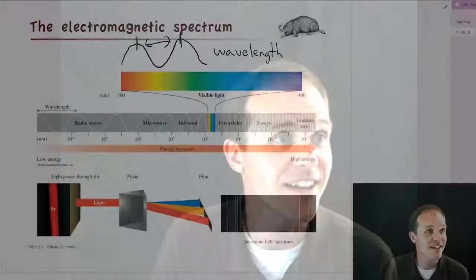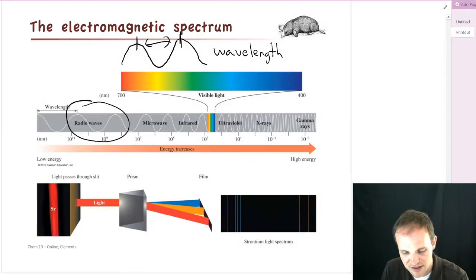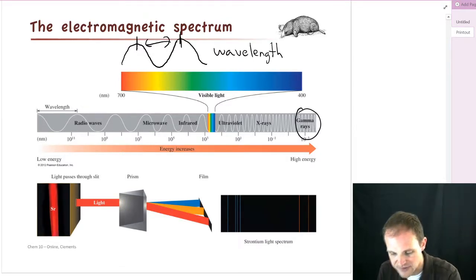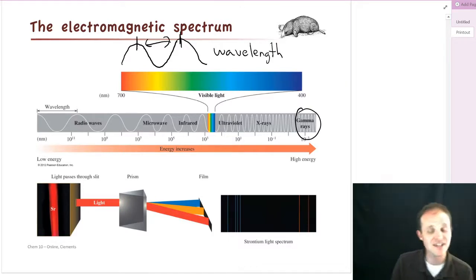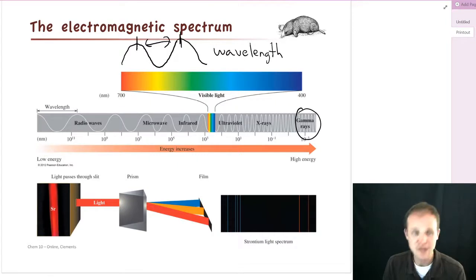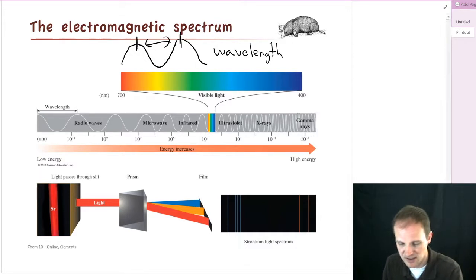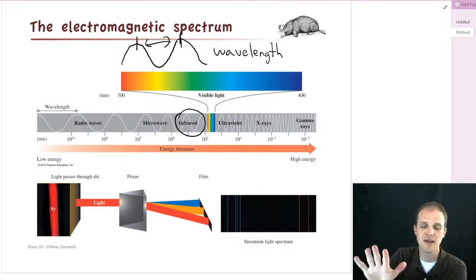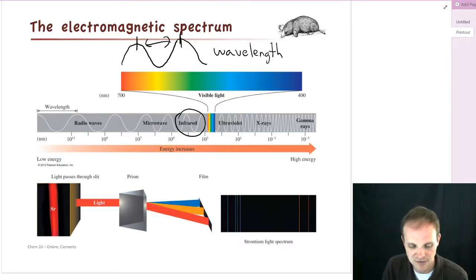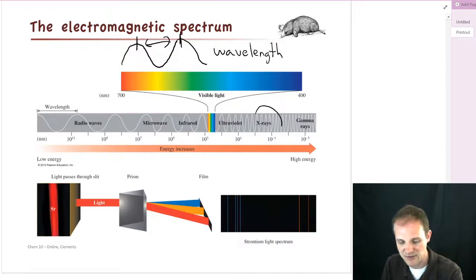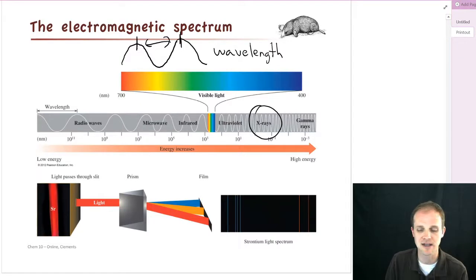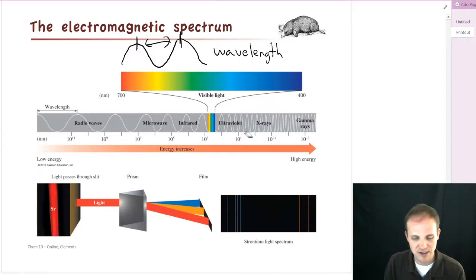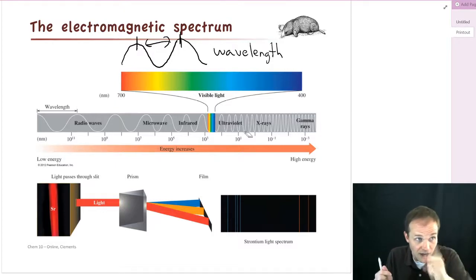Looking back at our electromagnetic spectrum: radio waves have very long wavelengths and very low energy. Gamma rays have very short wavelengths and very high energy. Infrared is relatively low energy — it's what you think of as heat. If something is hot, you can feel it by putting your hand near it; infrared light is coming off and hitting your hand. X-rays are high energy — you don't want a lot of those in your body. Going from radio waves to microwave to infrared to visible, the energy gets higher and higher, and the wavelength gets shorter and shorter.